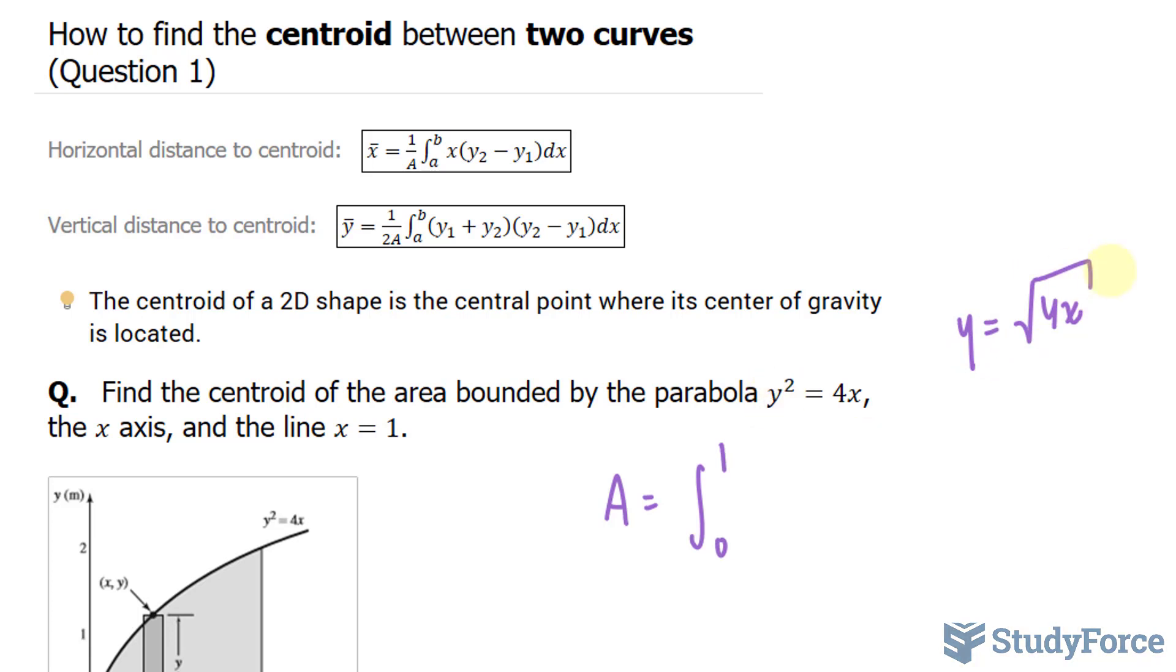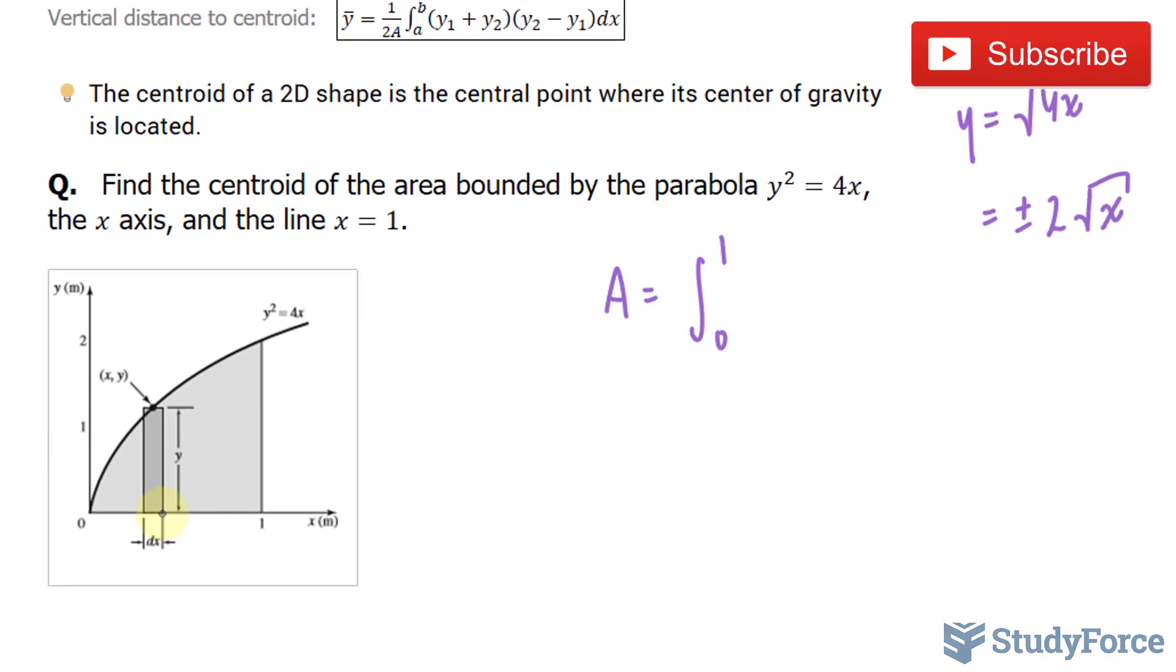Notice that I solved for y here, and I ended up with the following, and we can reduce this down further to plus minus 2 times the square root of x. We'll only take into account the positive 2 because it is between the x-axis, which is this, and the function's in the first quadrant, so it's only the positive version. So I'll highlight that.